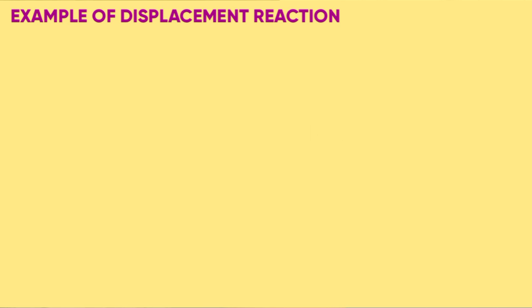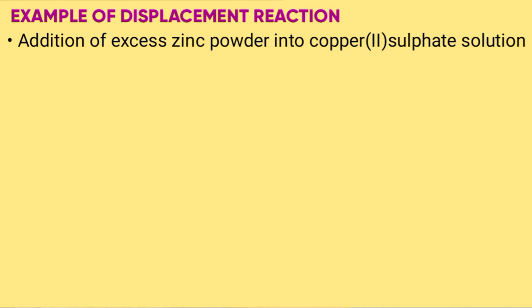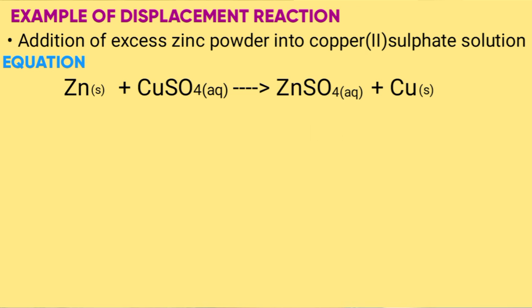Example of displacement reaction is addition of excess zinc powder into copper sulfate solution. Equation for the reaction will be zinc plus copper(II) sulfate gives zinc sulfate plus copper.